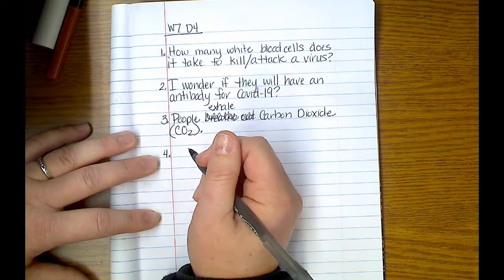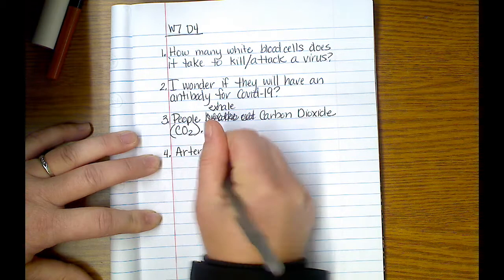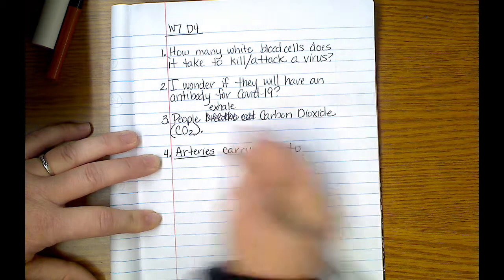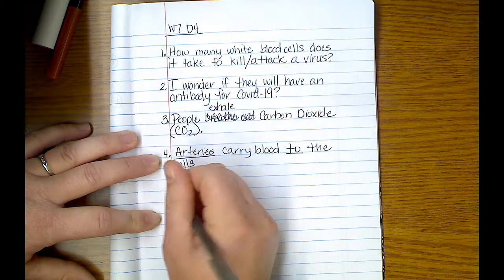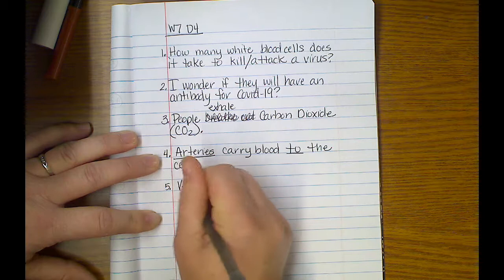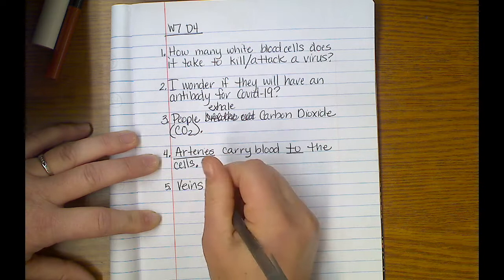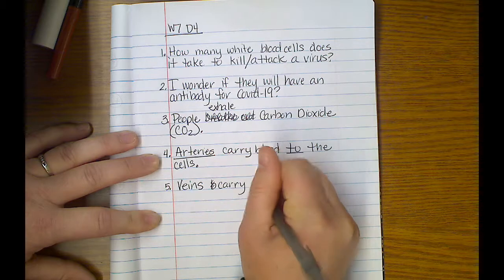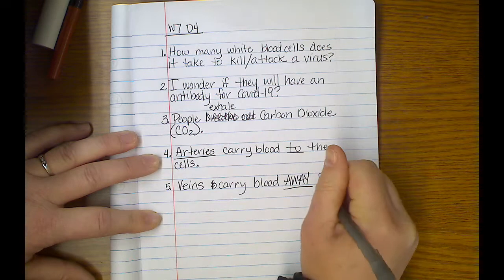And it says that the last thing. Arteries carry blood to the cells. Arteries carry blood to, I'm going to underline that, to the cells. And it says veins carry blood away. Veins carry away from the cells.